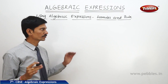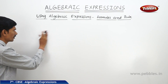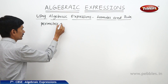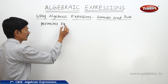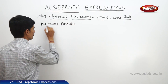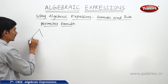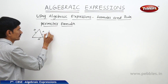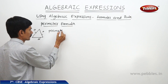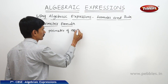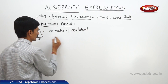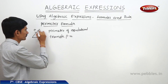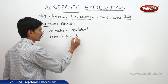Now let us see how to write formulas or rules in mathematics. First we will write the formulas regarding the perimeter. While writing perimeter formulas for any geometrical figure, if there is an equilateral triangle where all three sides are equal, the perimeter of an equilateral triangle whose side is A equals the sum of the three sides: A plus A plus A, that is 3A.